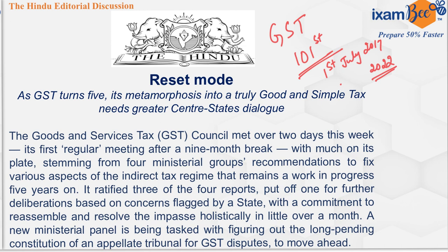The tax collection that state governments used to do — which was their revenue — was now absorbed into GST. The states argued this would be a loss for them. So the centre assured them that any revenue loss would be compensated, and this compensation was promised for 5 years.